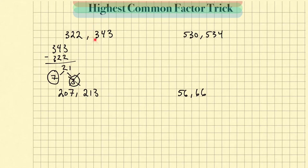Now I just need to check 343. Same rule — I double the last digit 3, which gives me 6. Then 34 minus 6 is 28. Since 28 is divisible by 7, I'm going to say that 7 is the greatest common factor.